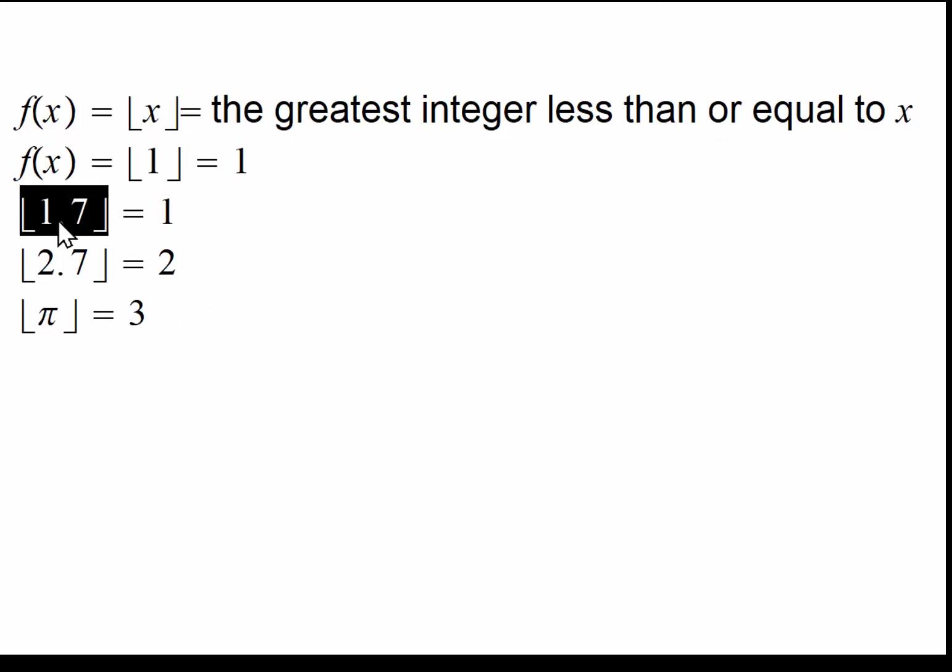And on the negative side, or on the negative axis, say I have negative 1.7 here. Now this time, the greatest integer less than or equal to negative 1.7 is negative 2. So that's what we are going to get.